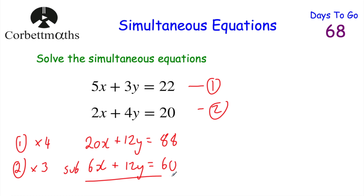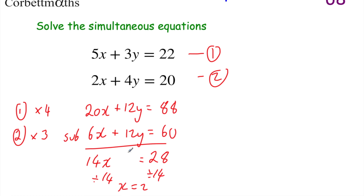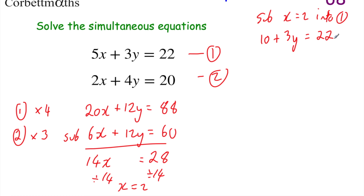Multiplying equation 2 by 3: 2x times 3 is 6x, 4y times 3 is plus 12y, and 20 times 3 is 60. Both equations now have 12y, so we can subtract them and the y's will cancel. 20x minus 6x is 14x, 12y minus 12y is 0, and 88 minus 60 is 28. So 14x equals 28. Dividing by 14 gives x equals 2. Now let's substitute x equals 2 into equation 1: 5 times 2 is 10 plus 3y equals 22. Taking away 10: 3y equals 12, divide by 3, y equals 4.